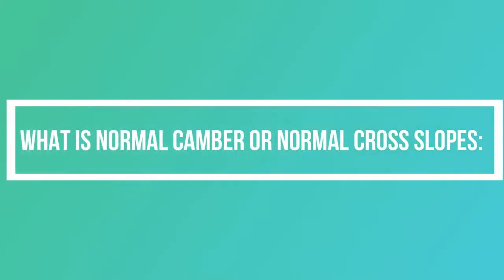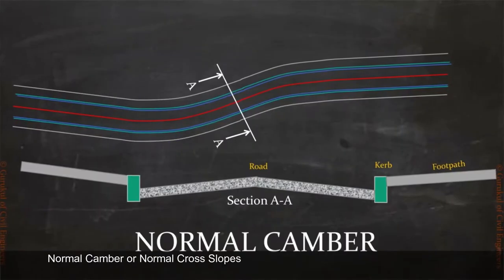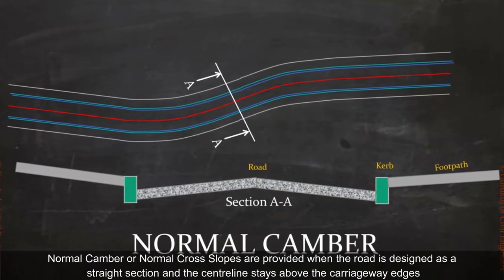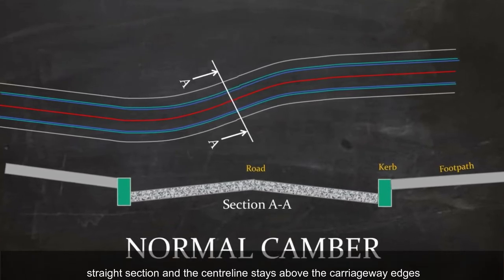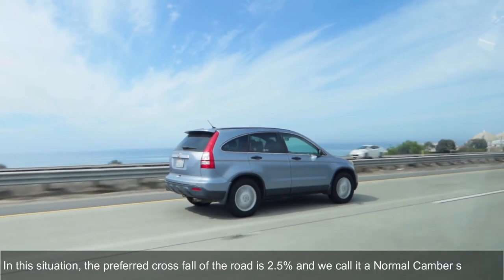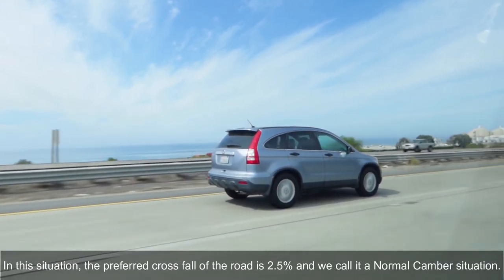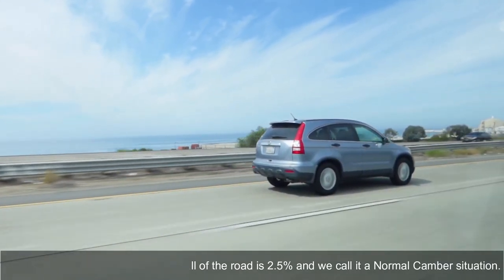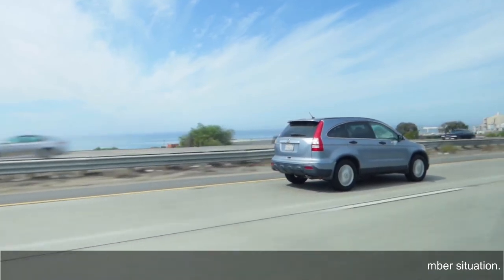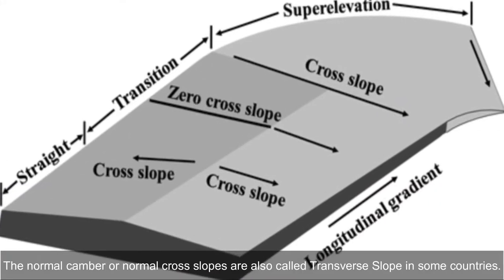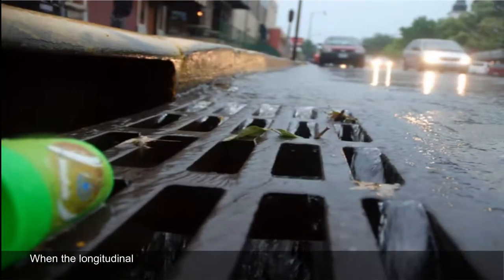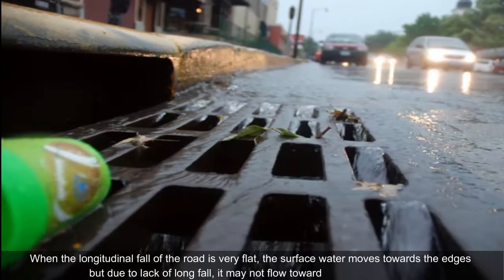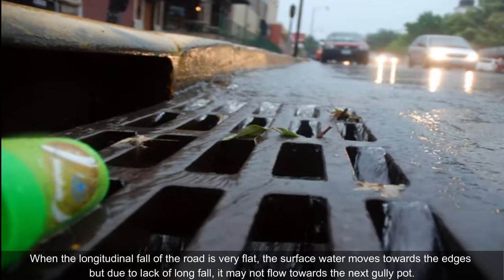What is normal camber or normal cross slopes? Normal camber or normal cross slopes are provided when the road is designed as a straight section and the central line stays above the carriageway edges. In this situation, the preferred cross fall of the road is 2.5%, and we call it a normal camber situation. Normal camber or normal cross slopes are also called transverse slope in some countries.